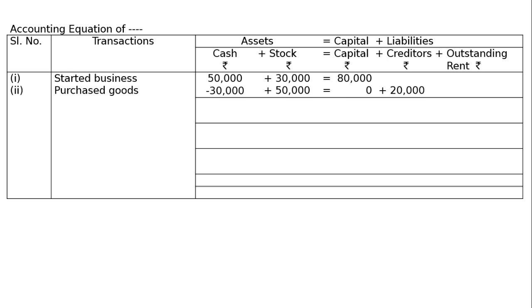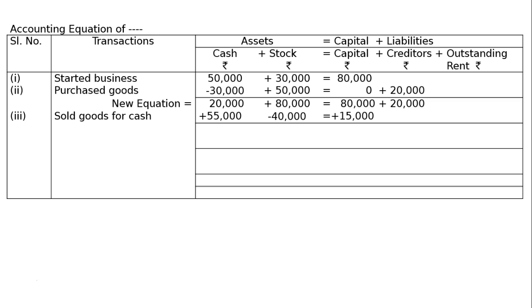Transaction three: goods costing rupees 40,000 were sold for rupees 55,000. Stock is reduced by 40,000, cash is increased by 55,000, and the profit is rupees 15,000. This profit increases our capital by 15,000.